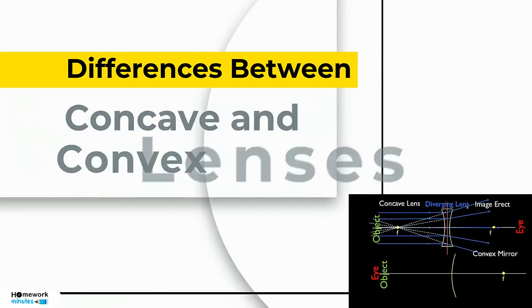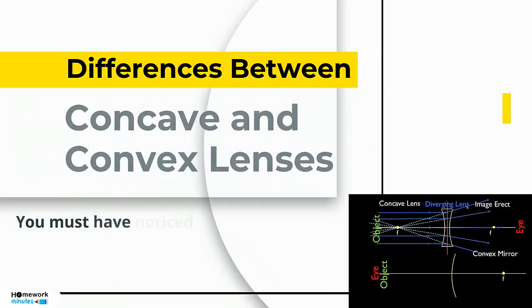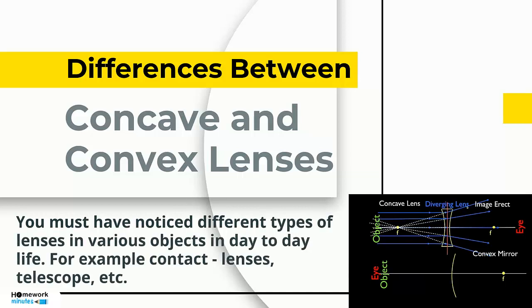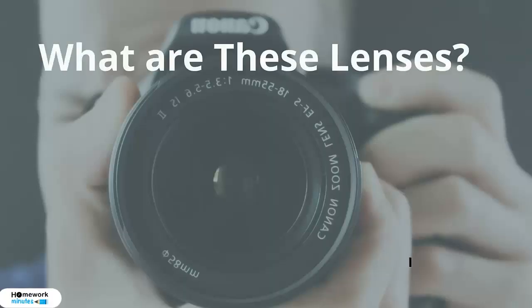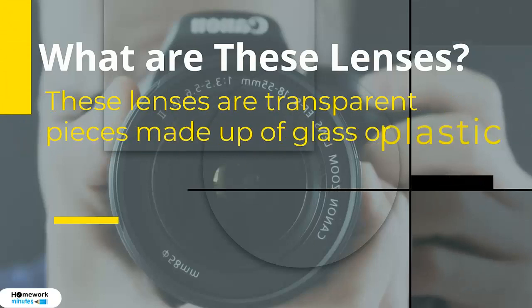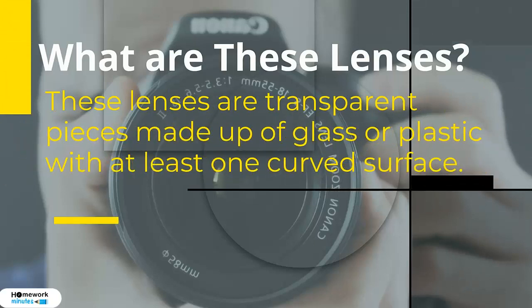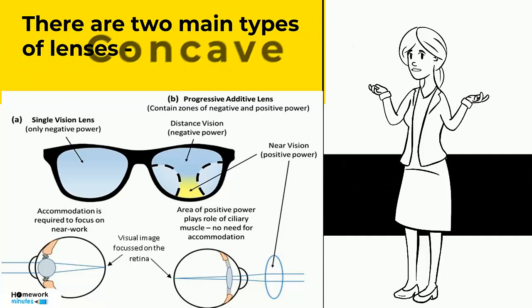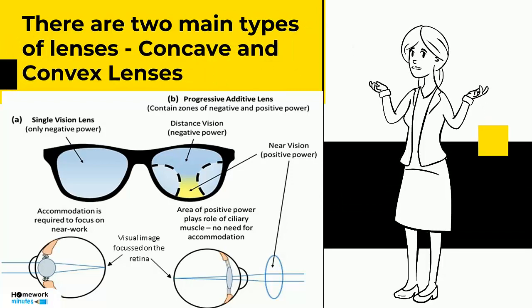Differences between concave and convex lenses. You must have noticed different types of lenses in various objects in day-to-day life, for example contact lenses, telescopes, etc. These lenses are transparent pieces made up of glass or plastic with at least one curved surface. There are two main types of lenses: concave and convex lenses.